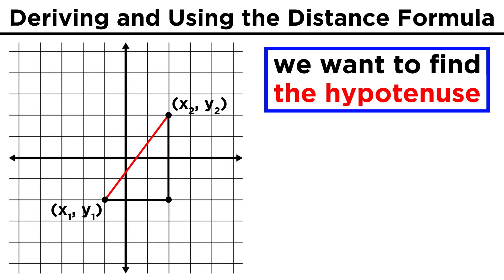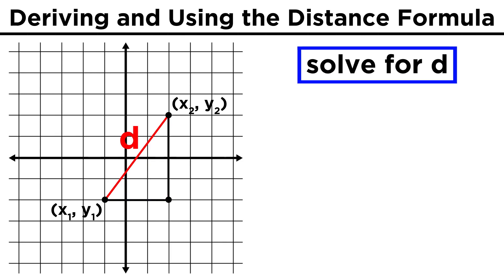This line will be the hypotenuse, and the legs will be the horizontal and vertical line segments we need to construct the triangle. Now let's label the hypotenuse as d, the distance we want to know.